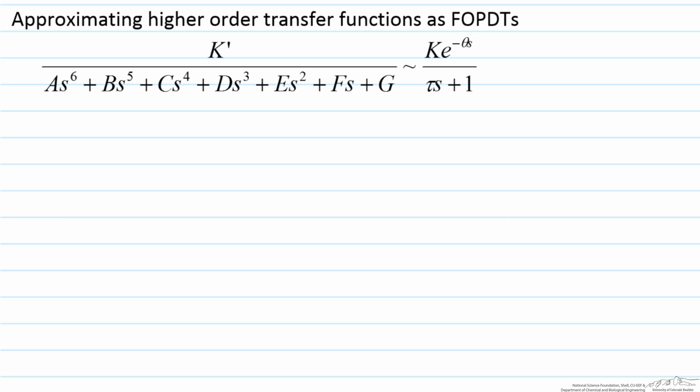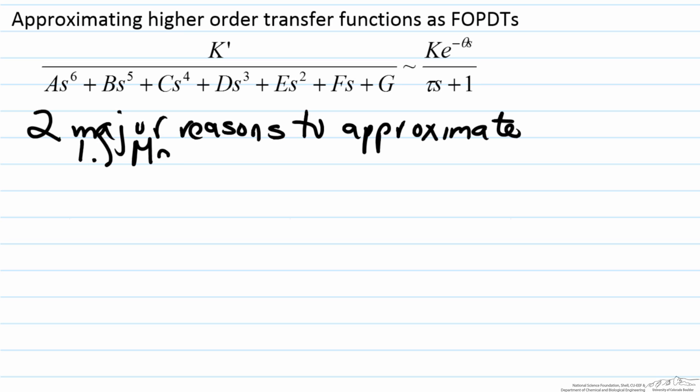First, the question that might come about is, I have the transfer function on the left, which is a sixth order transfer function. Why would I want to do this in the first place? So there are two major reasons to approximate. The first is mathematical in nature, the fact that the math is easier, so therefore in trying to do analysis for the FOPDT, it is much easier to do than trying to deal with a sixth order transfer function.